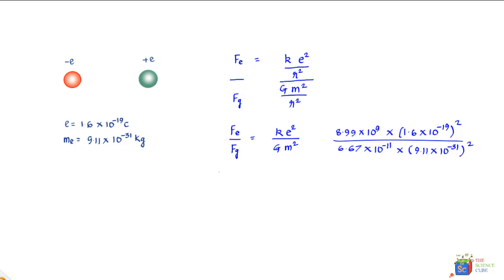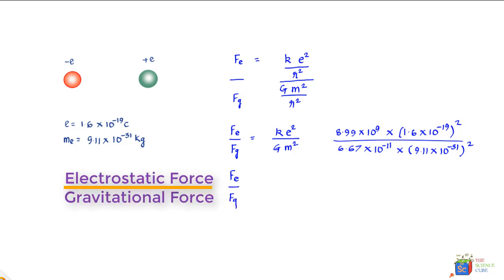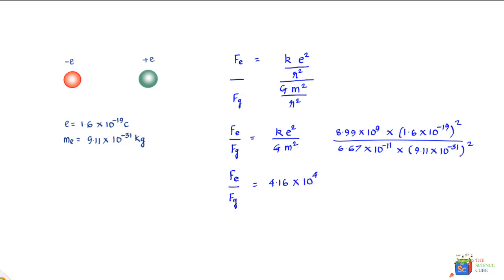When you simplify this, the ratio of electrostatic force to gravitational force equals 4.16 × 10⁴². While the solution to the problem was not very difficult, what is important is to observe that the electrostatic force between the two particles is significantly larger than the gravitational force.